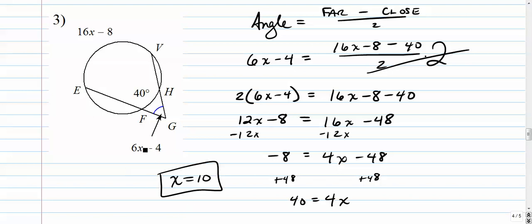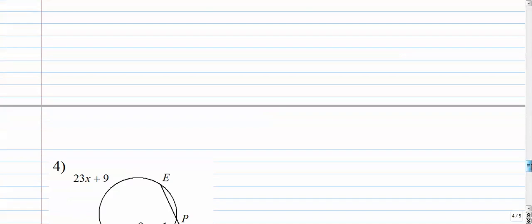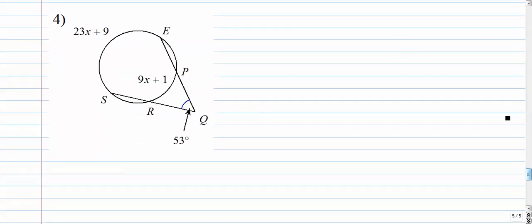And again, you can plug that back in to see if it fits. Number 4. Last one. A little bit more complicated this time, but the formula remains the same. The angle is equal to the faraway arc minus the close arc over 2.